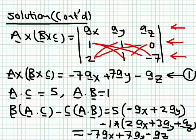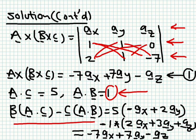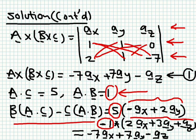This finishes the left-hand side. For the right-hand side, we calculate the two dot products: A dot C gives 5, and A dot B gives 1. The right-hand side is B times (A dot C) minus C times (A dot B): 5 times vector B minus 1 times vector C. Summing corresponding components: in the X direction, minus 5 minus 2 gives minus 7Ax; in the Y direction, 10 minus 3 gives 7Ay; and for Z, minus Az. This proves the two sides are identical.